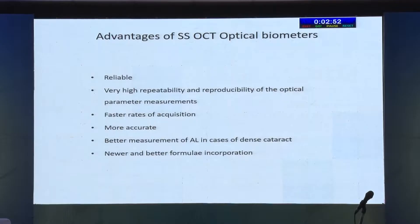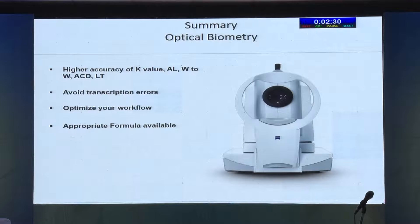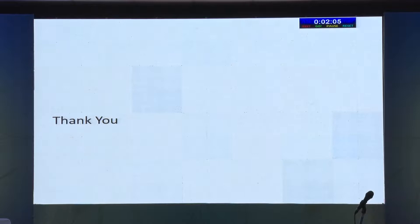Putting all of this together, the best source to get the best results would be a swept source optical biometer of any brand — highly reliable, highly repeatable, fast acquisition, very accurate, better measurements of axial length even in dense cataracts, and newer formulae incorporated. What you get is accuracy of K value, axial length, white-to-white, AC depth, lens thickness, no transcription errors, optimized workflow, and appropriate formula. Playing devil's advocate: you can work a little harder, spend maybe 5–10 minutes more per patient, and get almost the same results with a manual keratometer and ultrasound biometer.